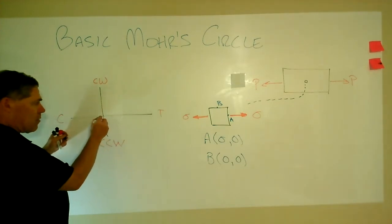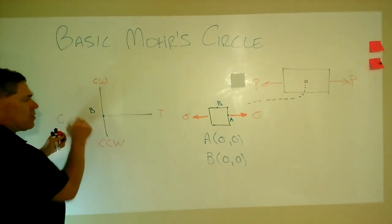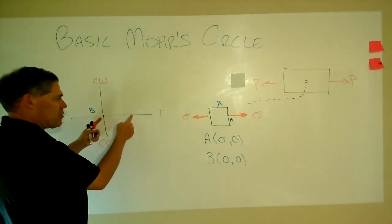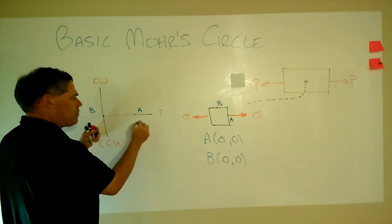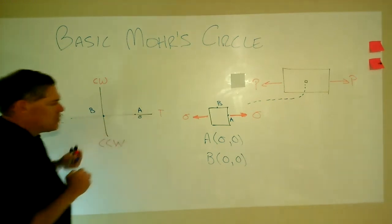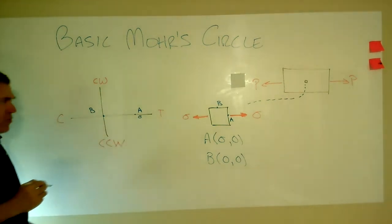And it would be equal to P over A here, and there's no shear stress on that plane. So we'd have zero for the second coordinate. For point B, we've got no stresses from a normal or a shear stress situation. So zero and zero would be the two coordinate points for that one. And then we just plot those two. So of course, B is at the origin.